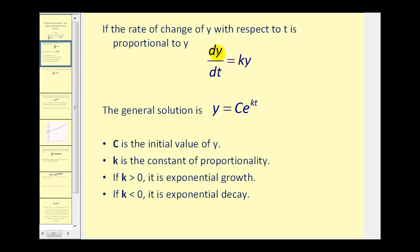If the change in y with respect to time is equal to some constant times y, then the solution is y equals C times e to the power of kt, where the value of k here is the rate of growth or decay based upon whether k is positive or negative.